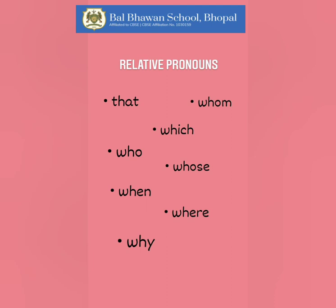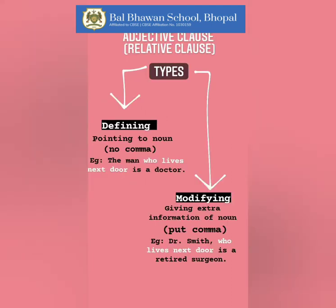Now, adjective clause or relative clause are of two types: defining and modifying. Defining means it points out to the noun. The sentences which are defining adjective clauses do not have a comma. For example, 'The man who lives next door is a doctor.' This is a defining adjective clause — it does not have any commas in it.